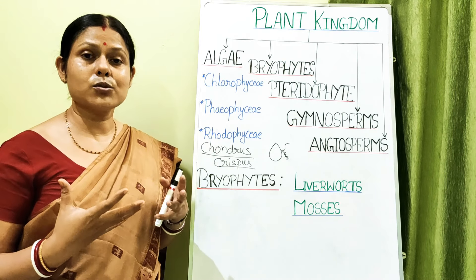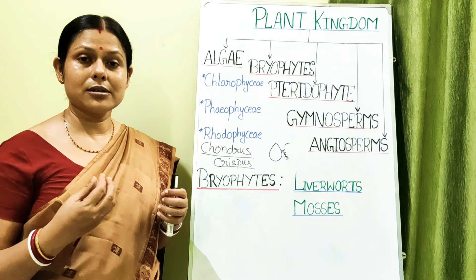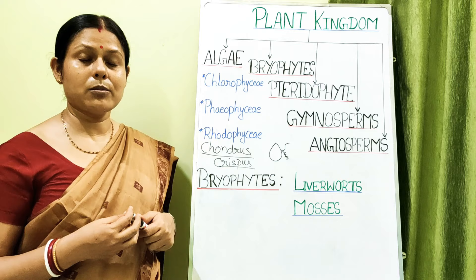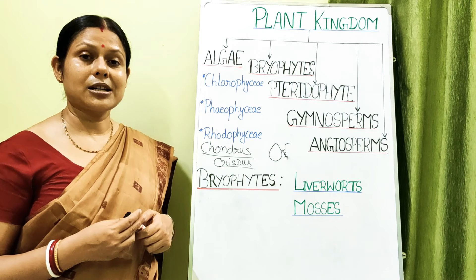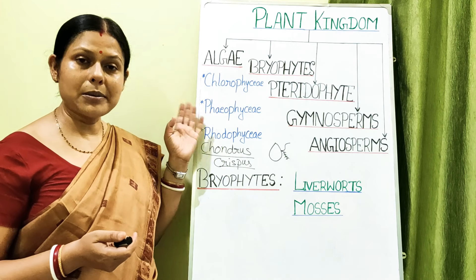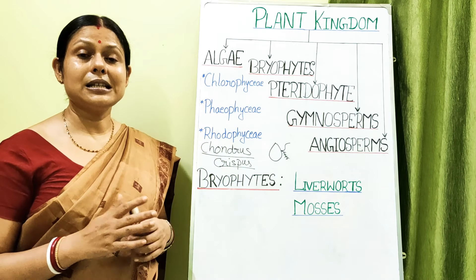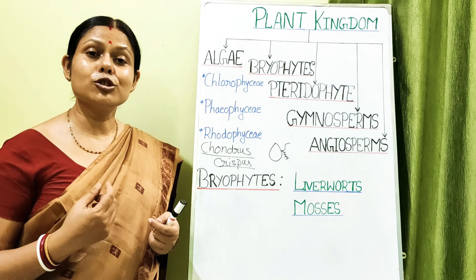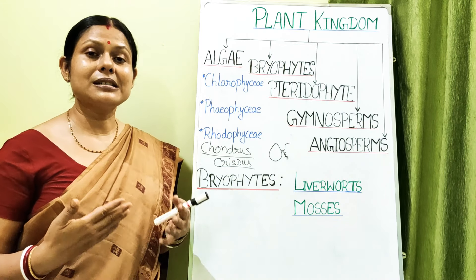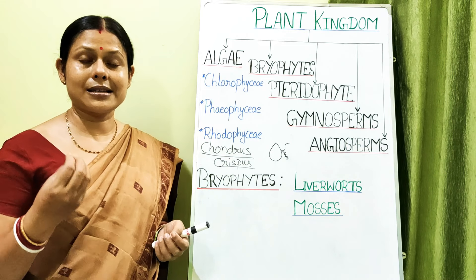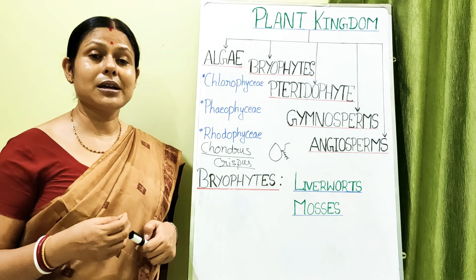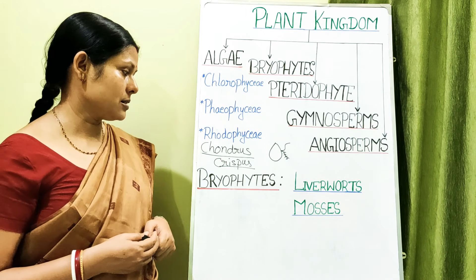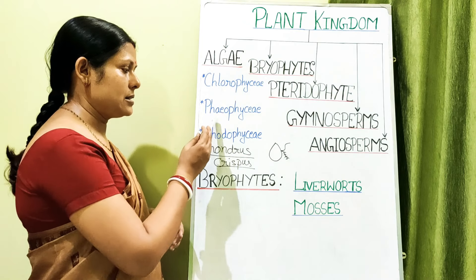Powdered Gracilaria or Gelidium extracts — or edible Phaeophycean members — are added to create the creamy texture of ice creams and puddings. They are even used in toothpaste to create a creamy consistency, and in cosmetics such as ointments. This covers the economic importance of all algae classes — Thallophyta.